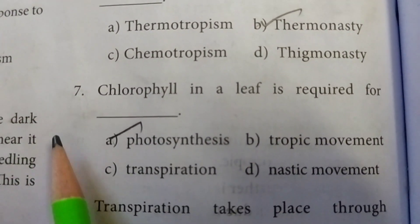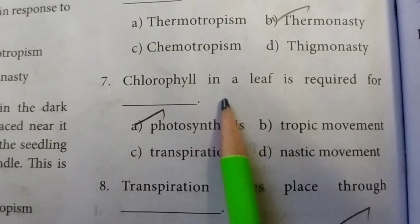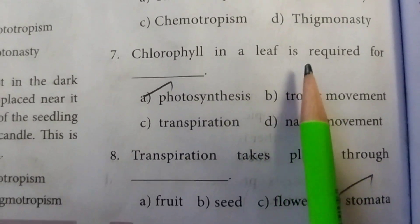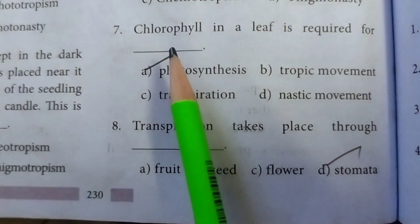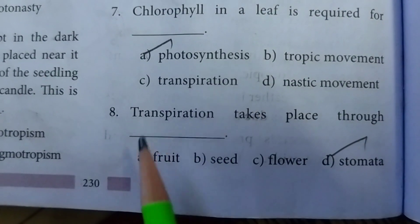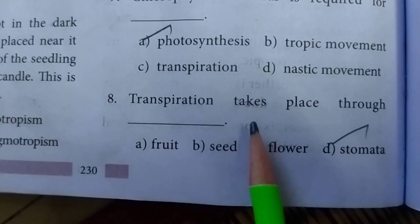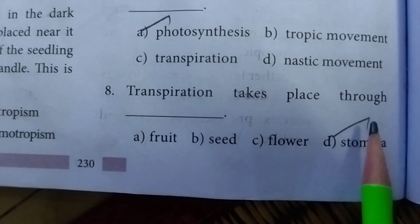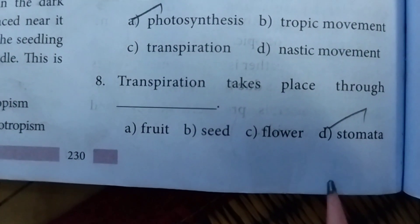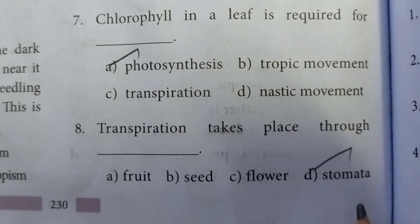Seventh one: chlorophyll in a leaf is required for option A, photosynthesis. Eighth one: transpiration takes place through option D, stomata.